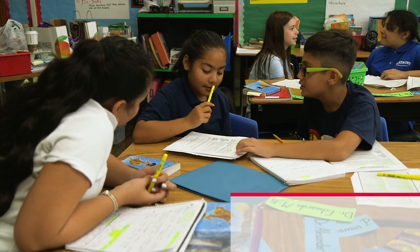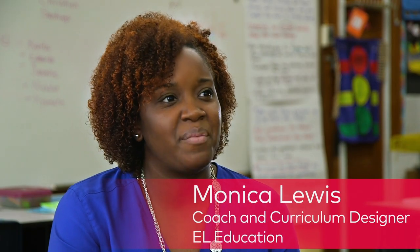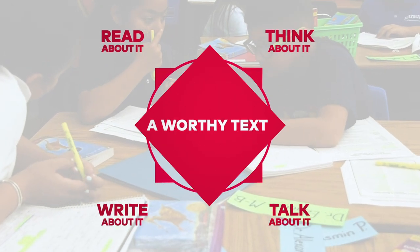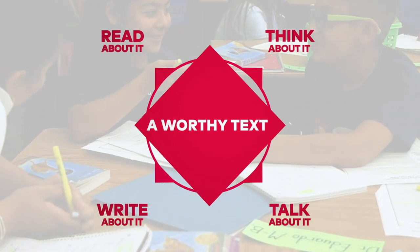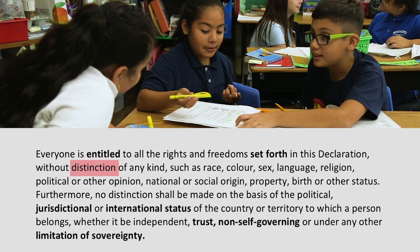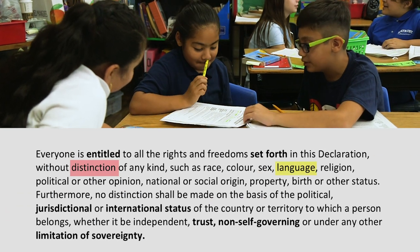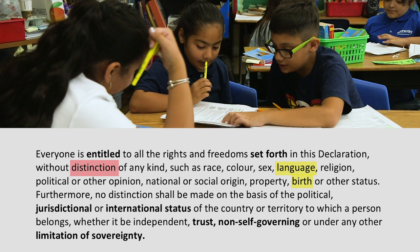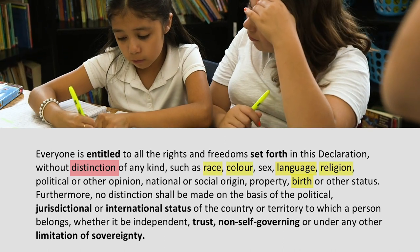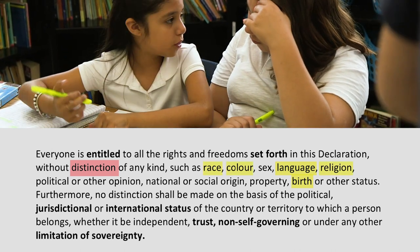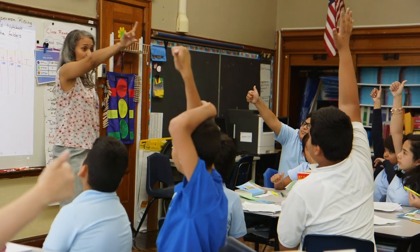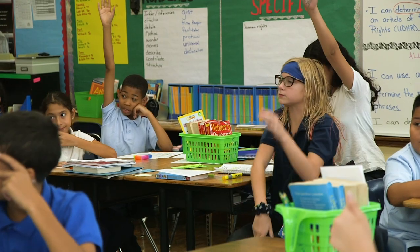Having that close read gives them that opportunity to bounce ideas off of each other. That's really important for students to make sure that they're doing that read, think, talk, write cycle. Birth, or language, and religion, race, color. Please give me at least one distinction that you talked about with your AB partner. Giovanni, give me one. Birth — remember, you're using the text. Birth. There you go.